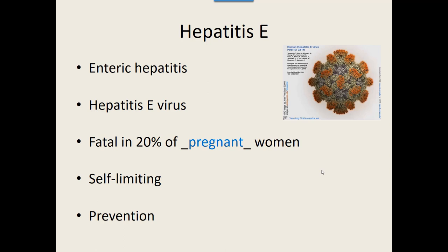However, the unique thing about hepatitis E is that it's actually fatal in about 20% of all pregnant women. They think it's due to the increase in hormones triggering this virus to do more damage to the liver as well as damage the immune system. It's a unique virus where pregnancy hormones trigger it to be more deadly — otherwise, even immunocompromised people usually don't have any long-lasting effects.